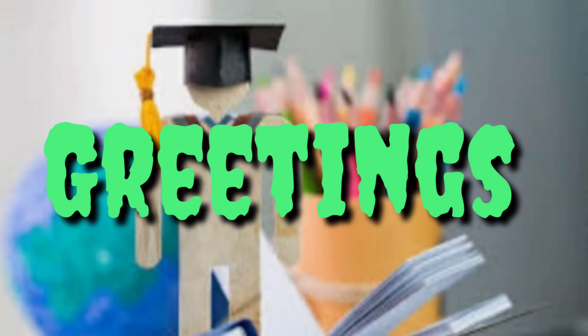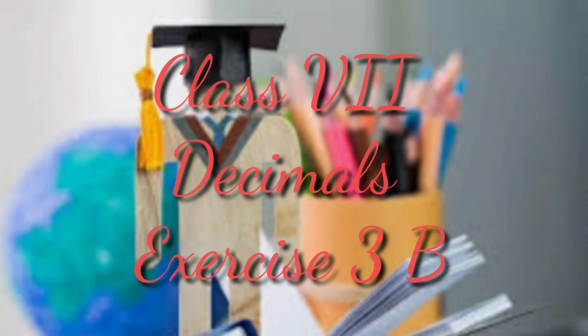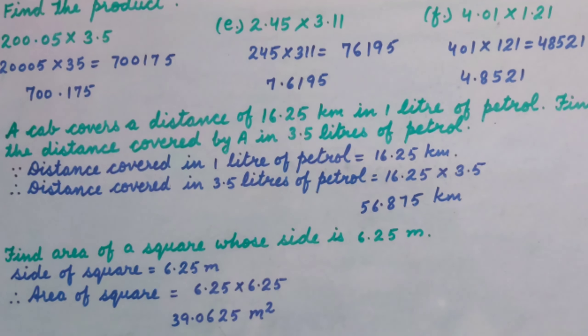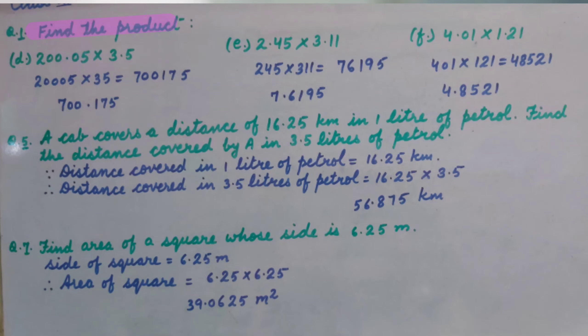Greetings my dear students. Let's resume the chapter on decimals. We will begin exercise 3B, question number 1: Find the product. Part D: 200.05 multiplied by 3.5.